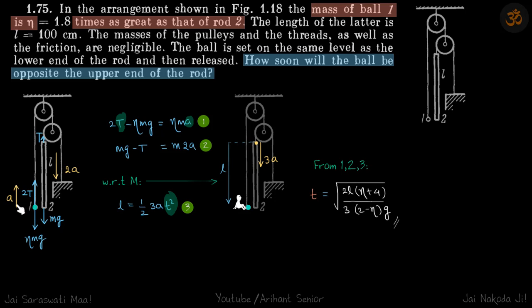Let's assume the accelerations. If the ball is going up with acceleration a, then with our constraint equation you can see that the rod is coming down with acceleration 2a.